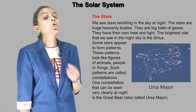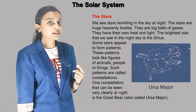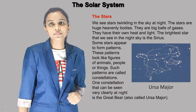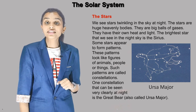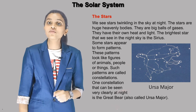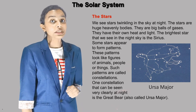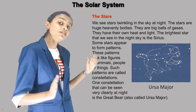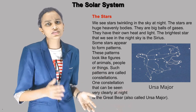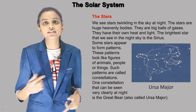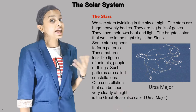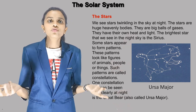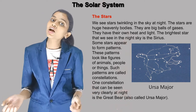They have their own heat and light. The brightest star that we see in the night sky is Sirius. Some stars appear to form patterns — like shapes of triangles, squares, rectangles, and other patterns. These patterns look like figures of animals, people, or things.